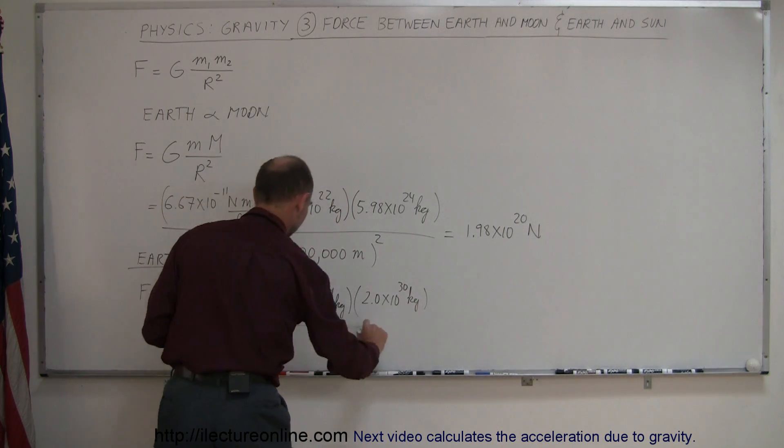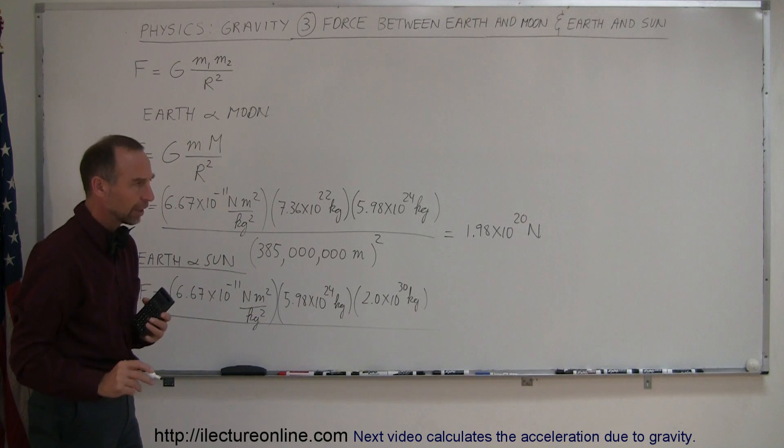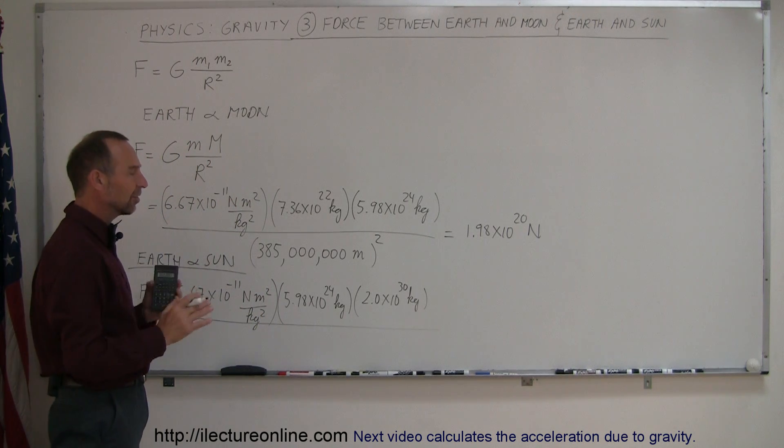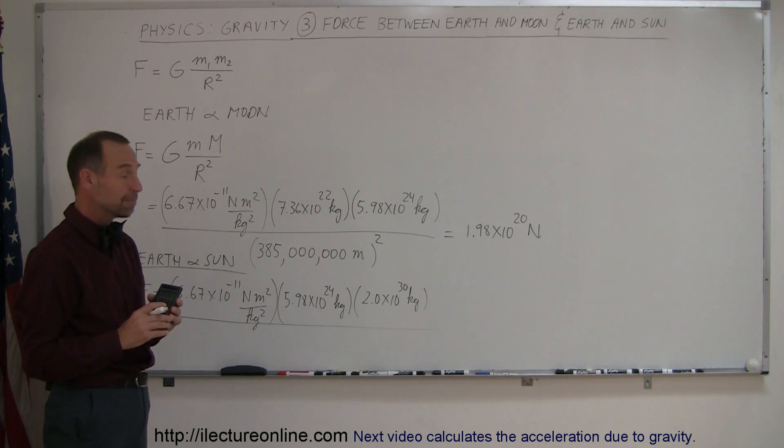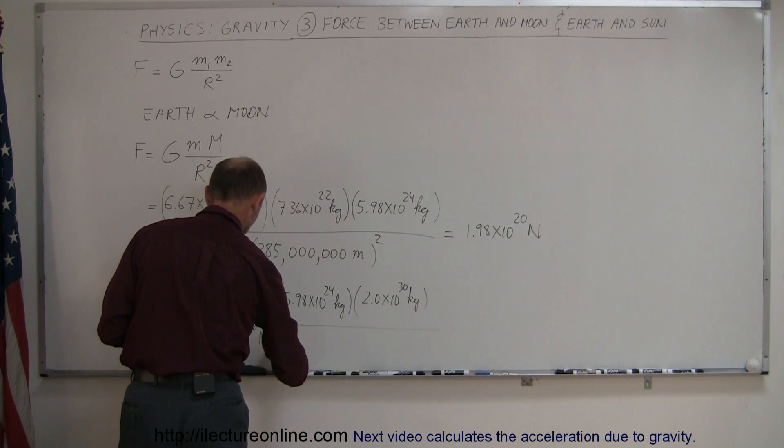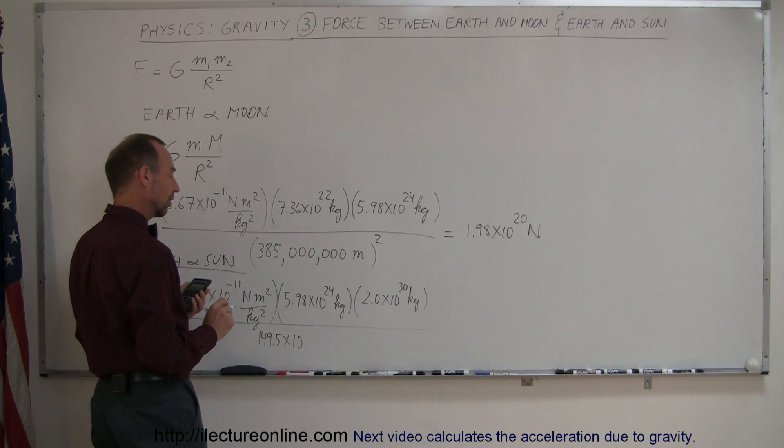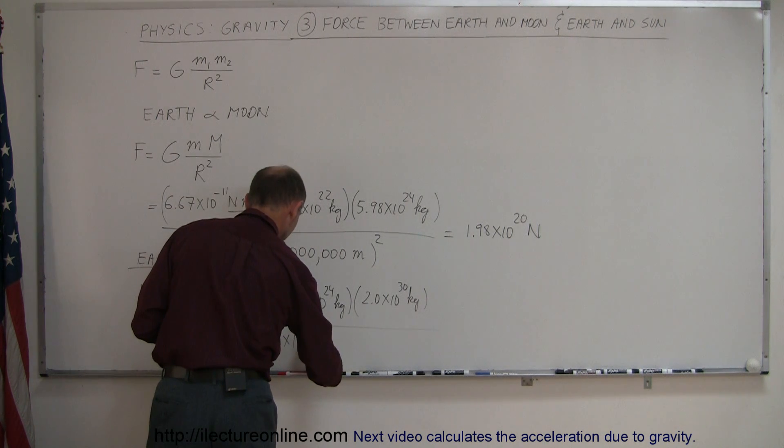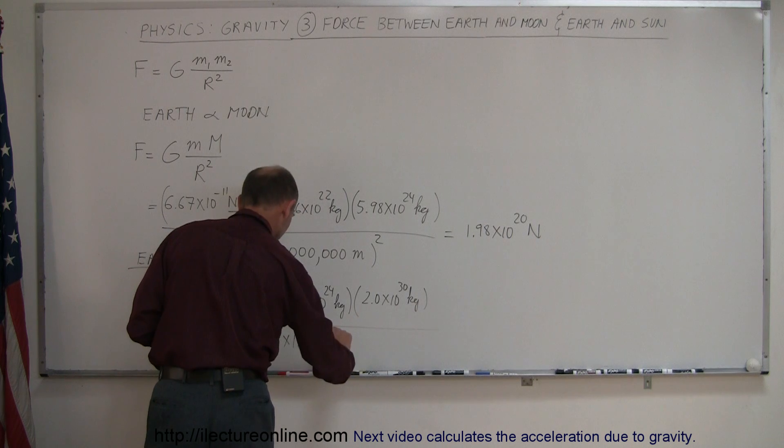The whole thing divided by the distance between the Earth and the Sun. The average distance is around 149,500,000 kilometers, so 149.5 times 10 to the 9th meters, and we have to square that.